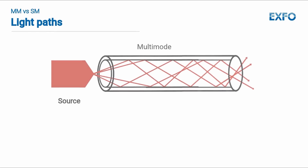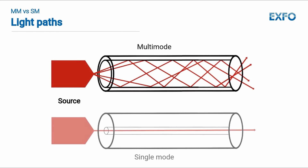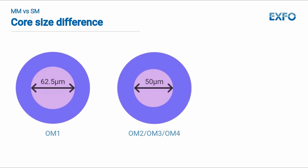Here is a visual of the light paths of multi-mode and single-mode. As you can see, multi-mode uses several light paths, whereas single-mode uses a single path. These multiple light paths are possible due to multi-mode fibers having a much larger core compared to the narrow channel in a single-mode fiber.